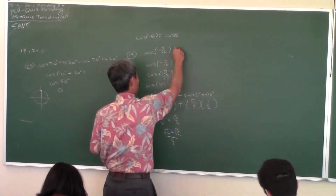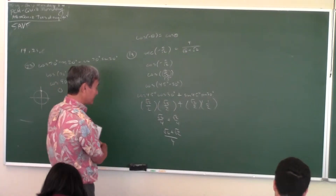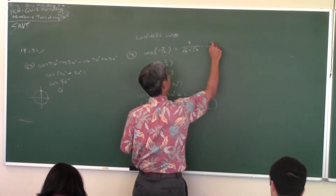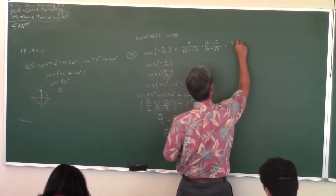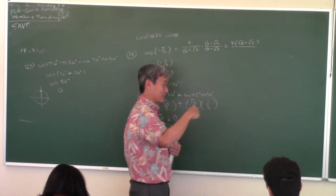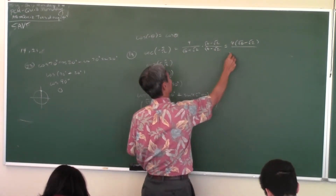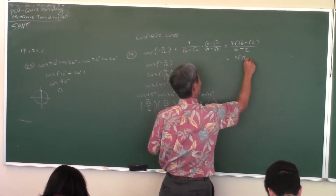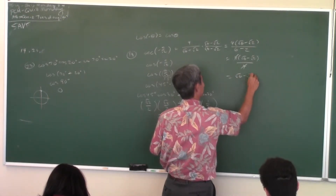Now we have to flip it over because we want secant, so the answer for this problem is 4 over (root 6 plus root 2). How do you simplify when you have radicals in the denominator? Multiply top and bottom by the conjugate. So you get 4 times (root 6 minus root 2) on top, and on the bottom (root 6 plus root 2)(root 6 minus root 2) = 6 minus 2 = 4. The 4's cancel out and your final answer is root 6 minus root 2.